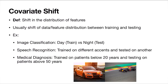Covariate shift means there is some change in the distribution of features, occurring between training and testing. If you train the model under one dataset and test it under different conditions, that is a shift in the dataset. For example, if you train a model identifying sedan cars and during testing you pass a race car it has never seen, that is a shift in the dataset — the distribution got shifted between training and testing.